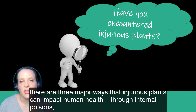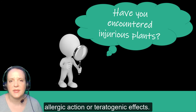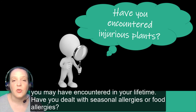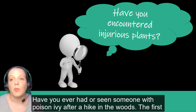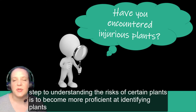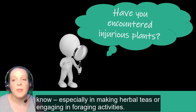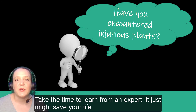In conclusion, there are three major ways that injurious plants can impact human health: through internal poisons, allergenic action, or teratogenic effects. Think about all of the different injurious plants you have encountered in your lifetime. Have you dealt with seasonal allergies or food allergies? Have you read about any cases of mistaken identity and accidental plant poisonings in the news? Have you ever had or seen someone with poison ivy after a hike in the woods? The first step to understanding the risks of certain plants is to become more proficient at identifying plants in your environment. You should never experiment with plants that you don't know, especially when making herbal teas or foraging. There are many courses available from qualified botanists to teach you hands-on plant ID. Take the time to learn from an expert — it just might save your life.